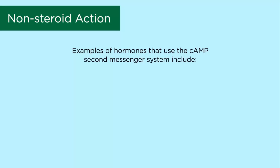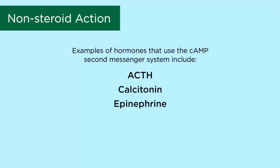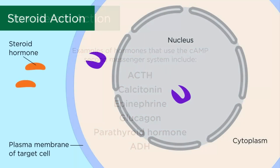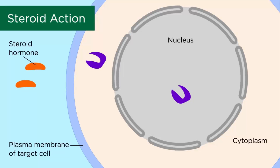Examples of hormones that use the cyclic AMP second messenger system include ACTH, calcitonin, epinephrine, glucagon, parathyroid hormone, and ADH. The second mechanism is the steroid action.